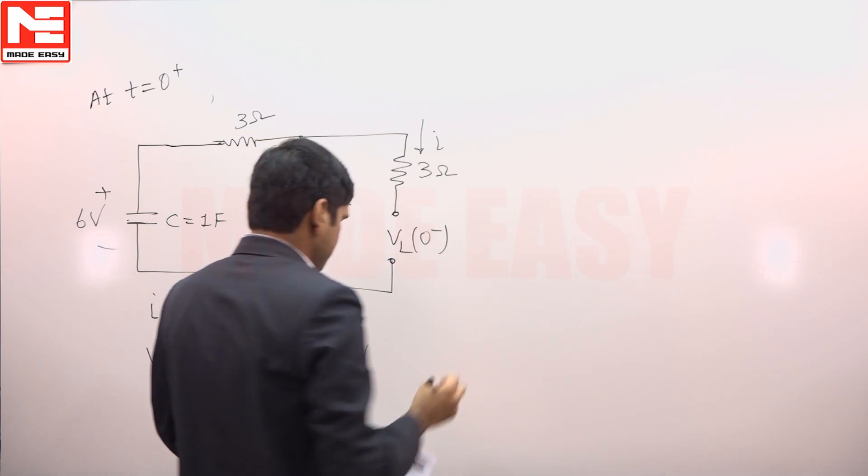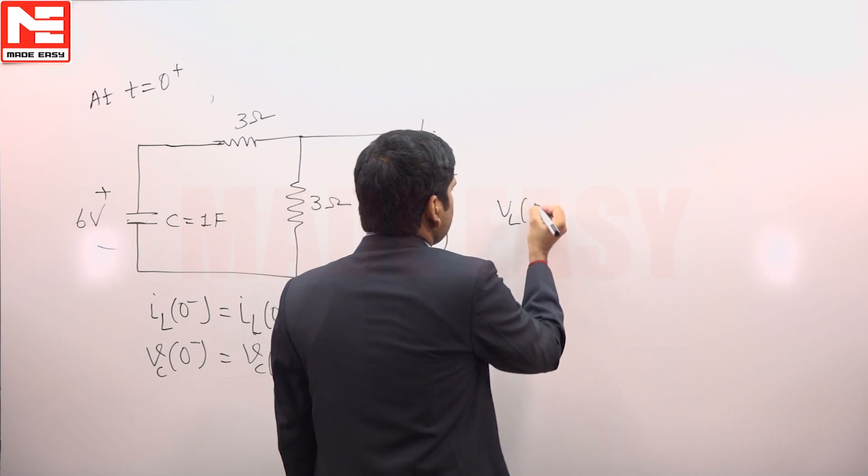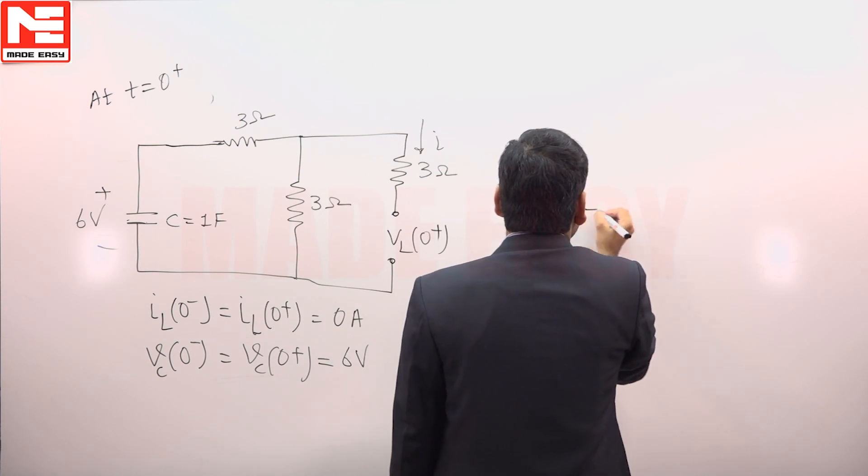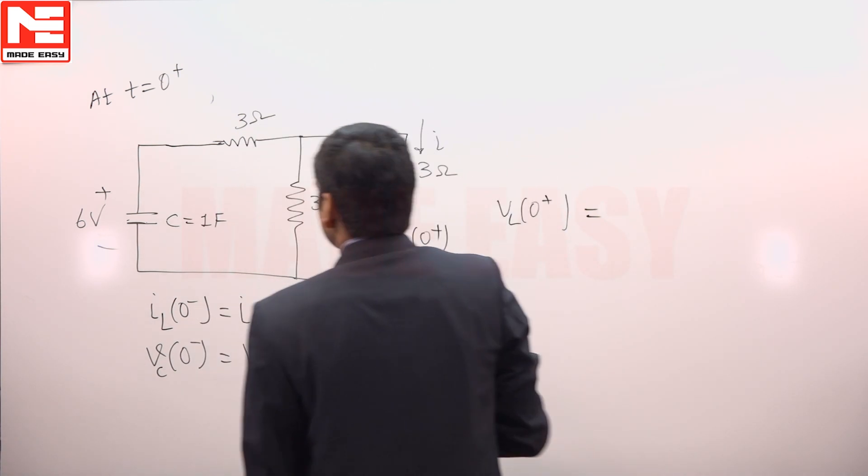VL(0-), this is open circuit. Now VL(0+), we are drawing at 0+. VL(0+) is equal to, we can apply voltage division rule.